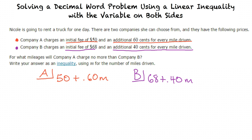Now we need to set these two expressions into an inequality. The question is: for what mileages will Company A charge no more than Company B? This means we need to solve for M such that the cost of Company A is equal to or less than the cost of Company B, but not any more than B. So our inequality is: 50 plus 0.60M is less than or equal to 68 plus 0.40M.